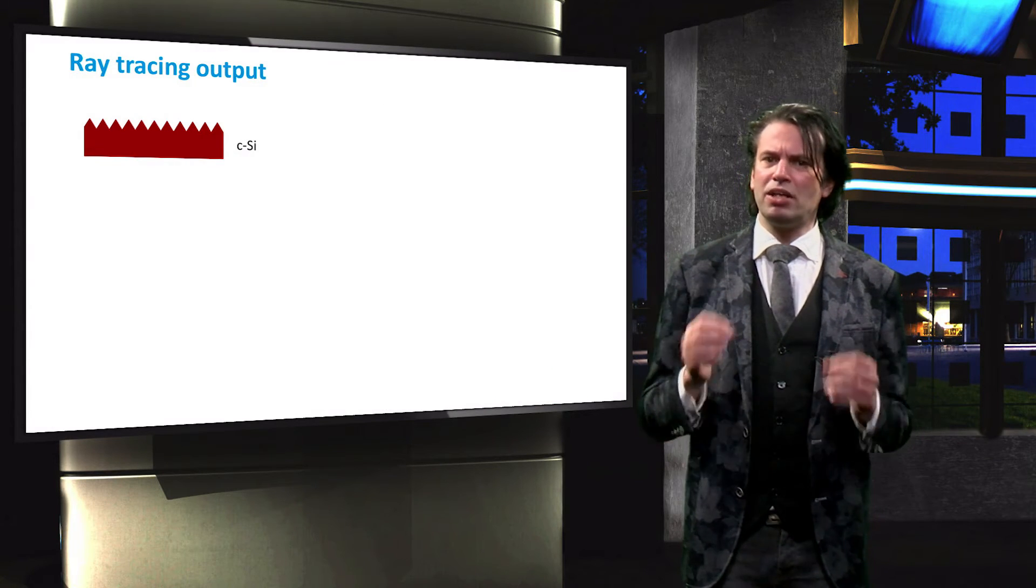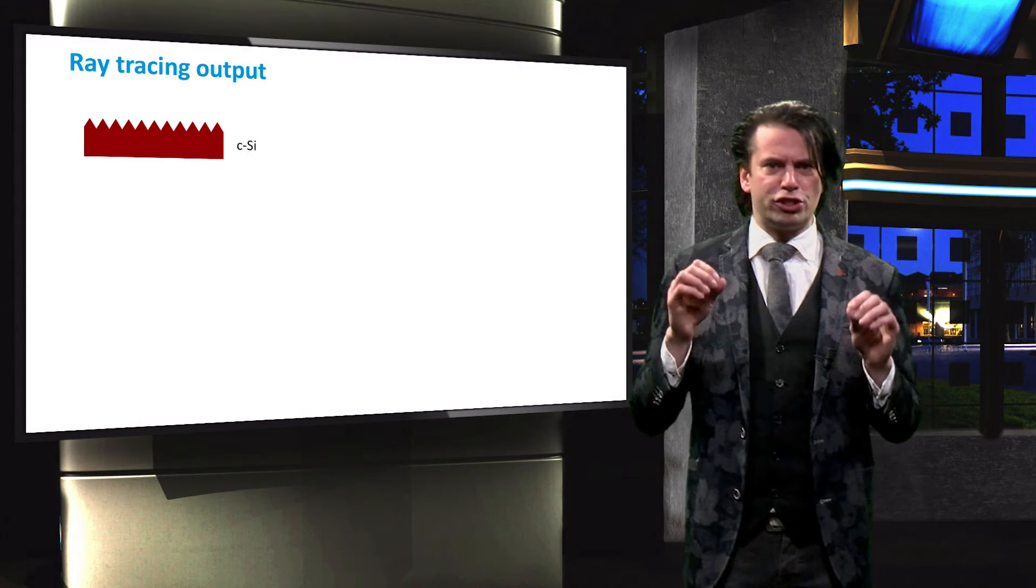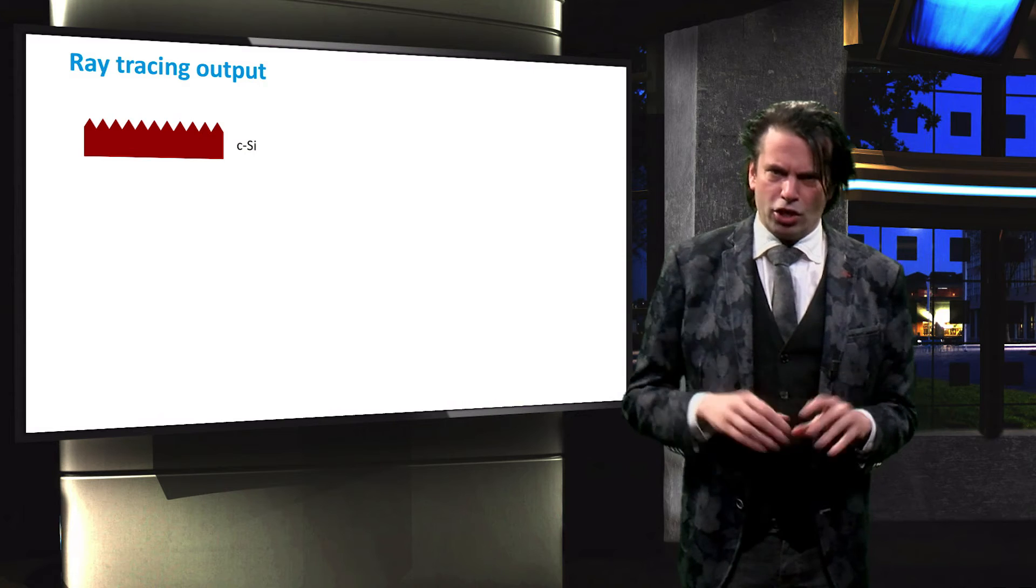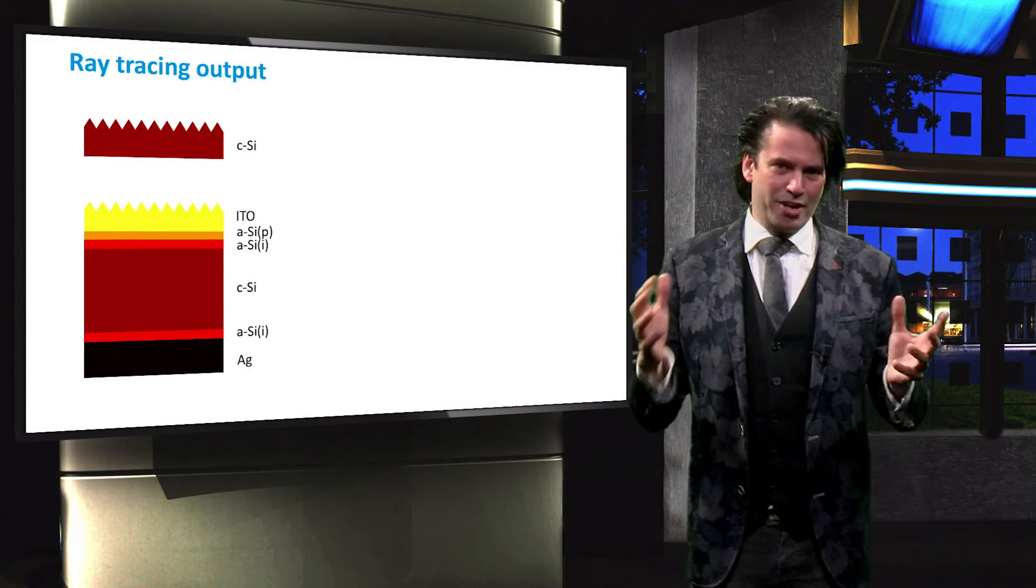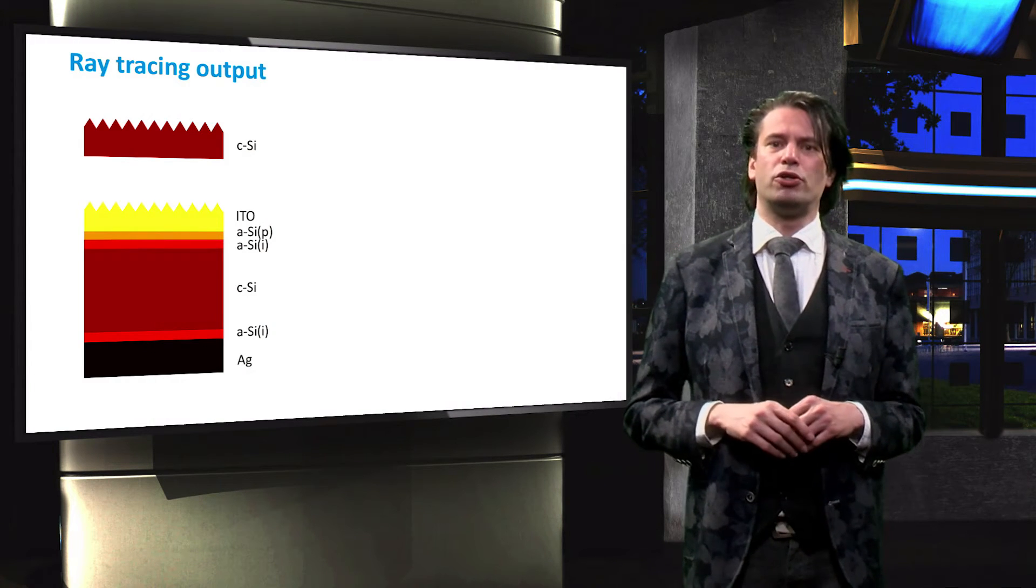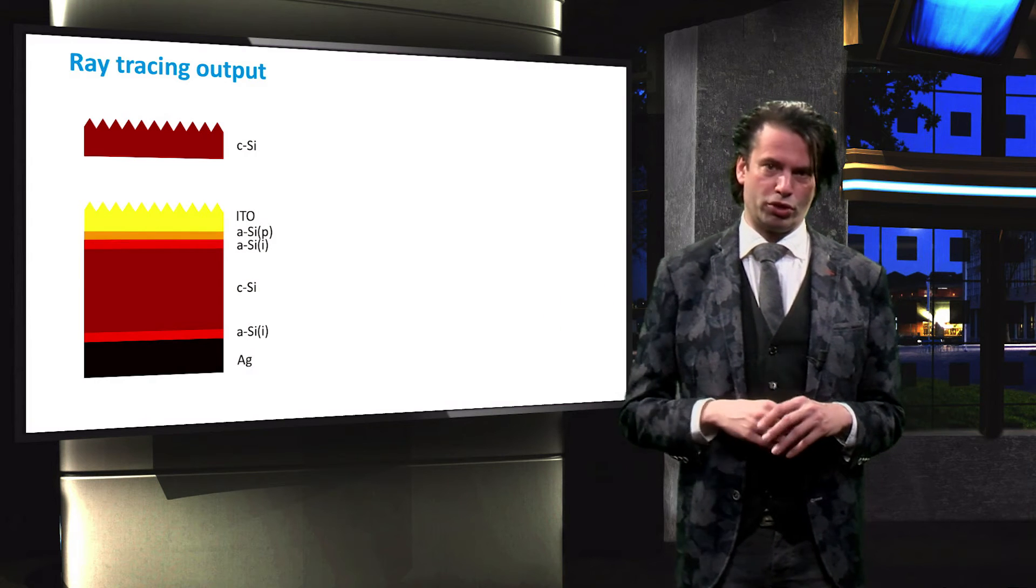We have simulated the reflectivity and transmissivity of a single layer with a periodic pyramidal structure. Solar cells, however, can include any number of layers. We can expand the ray tracing model to include all the layers and their properties of the shown solar cell.